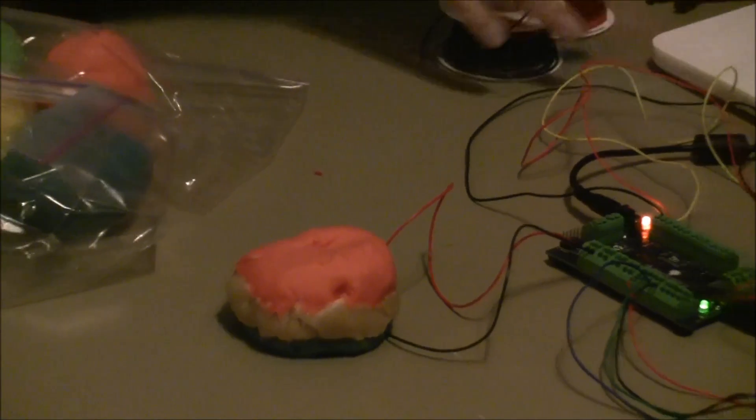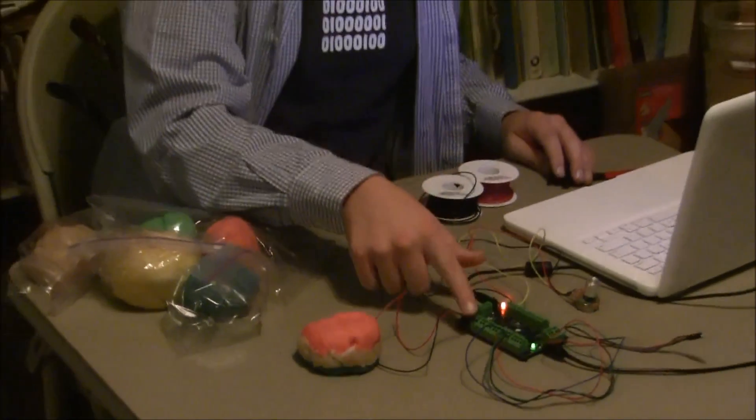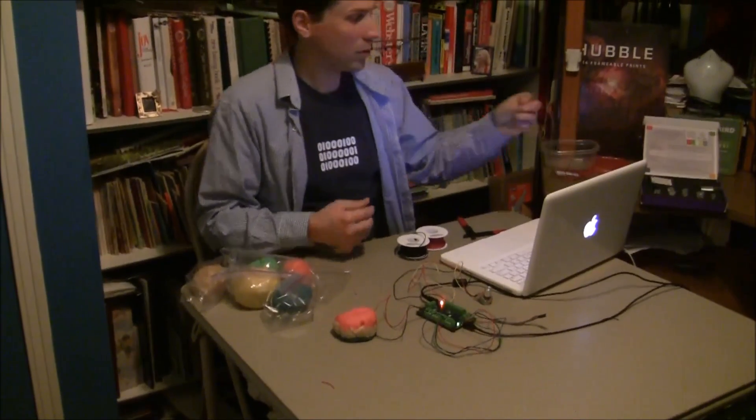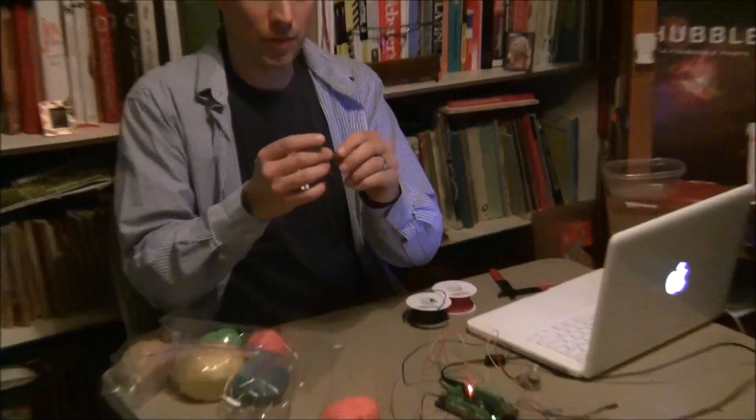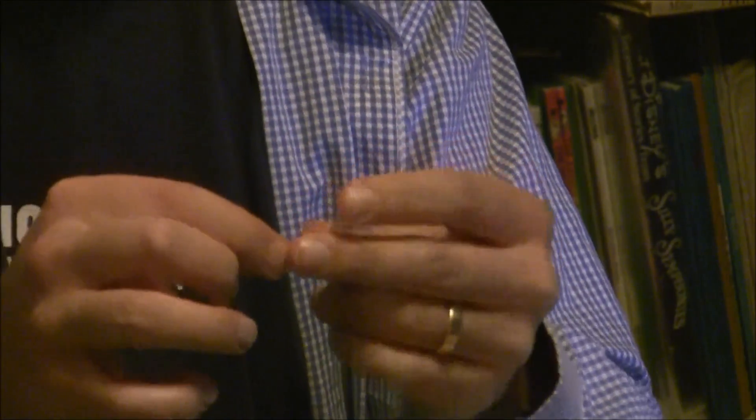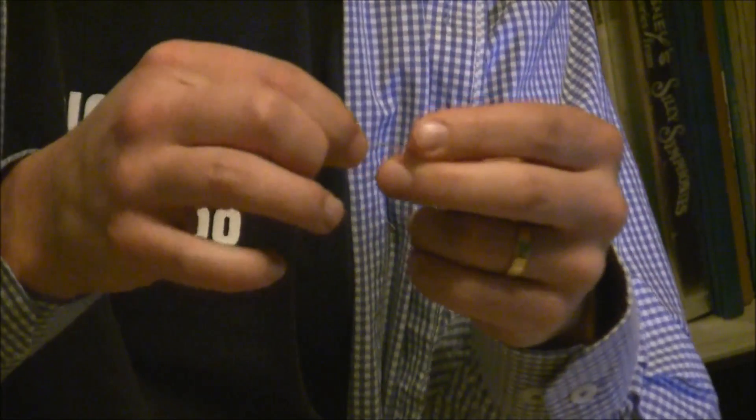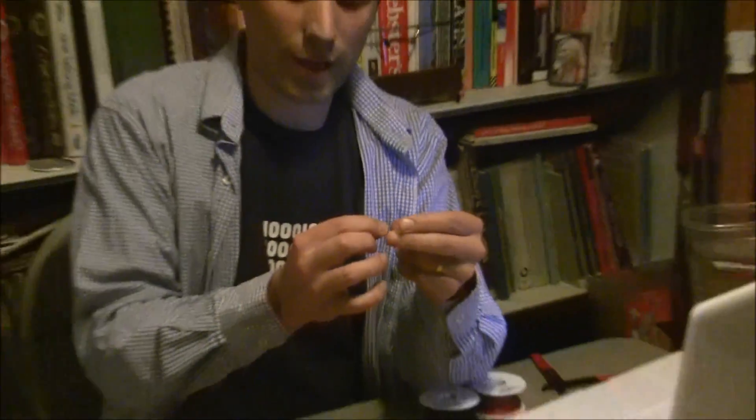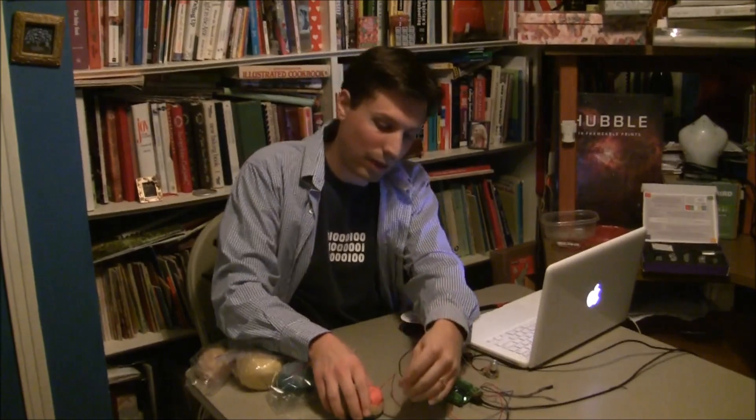I have the Hummingbird hooked up to snap, and I have this LED port set to the maximum value. Now I'm taking a red LED. The LED has two legs, and one is longer than the other, and that's important. The long leg has to go to the positive side of the circuit, and the short leg has to go to ground, to the negative side.